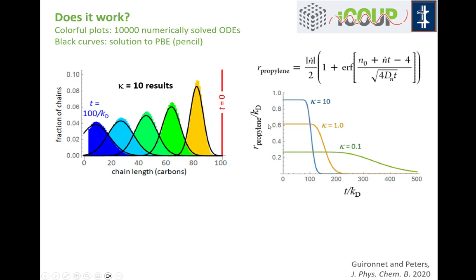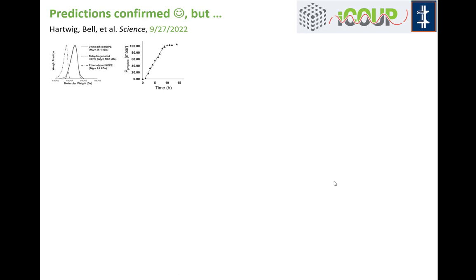Remember those parameters are tied together by their relationship to the underlying kinetic parameters in the model. We get a prediction that the propylene production rate stays approximately constant until chains get so short they can't be cut anymore, then it drops off as the entire distribution of chains reaches that threshold and drops to zero. The experiment sees very similar behavior.